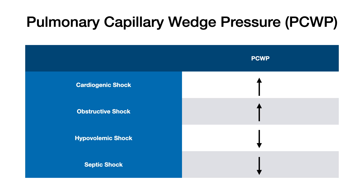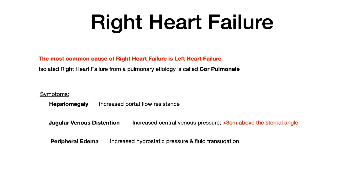Now, let's talk about right-sided heart failure. Something that attendings love to pimp medical students on is that the most common cause of right-sided heart failure is left-sided heart failure. Left side of the heart can't pump, blood backs up in the left ventricle, goes into the pulmonary system, and going one step further back, into the right ventricle. So the most common cause of right-sided heart failure is left-sided heart failure.